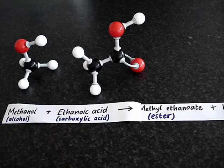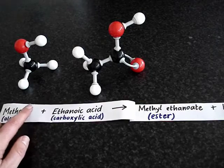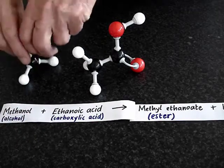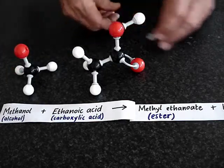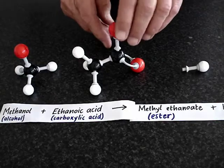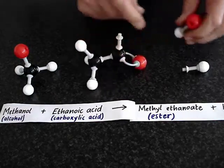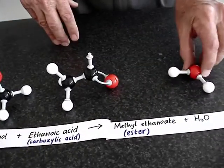And they are going to react to make an ester. So first of all, the methanol loses a hydrogen atom. And the ethanoic acid loses a hydroxyl group, OH. And then those bond, the hydrogen atom and the hydroxyl, to form water.